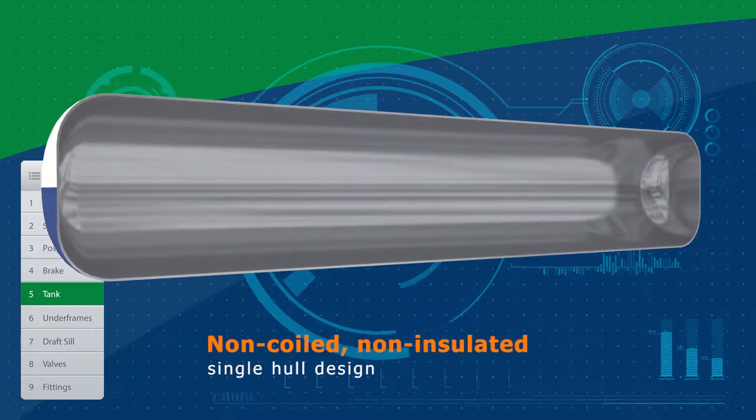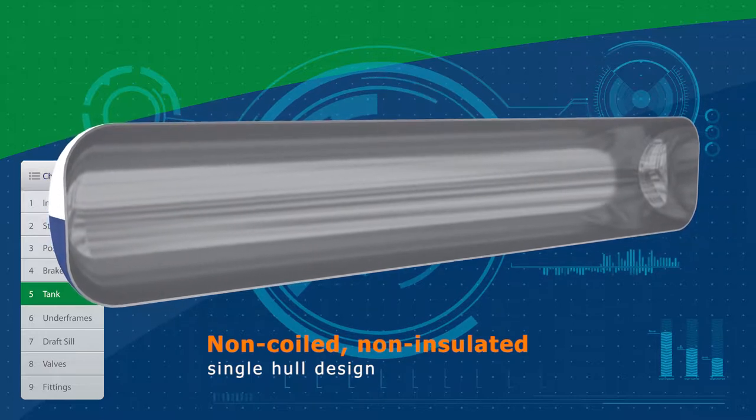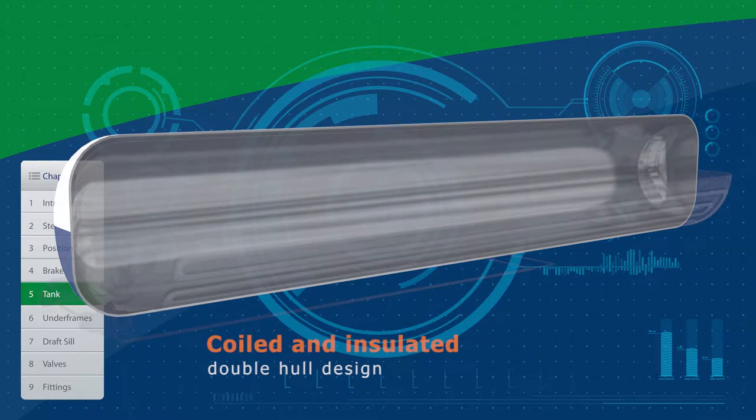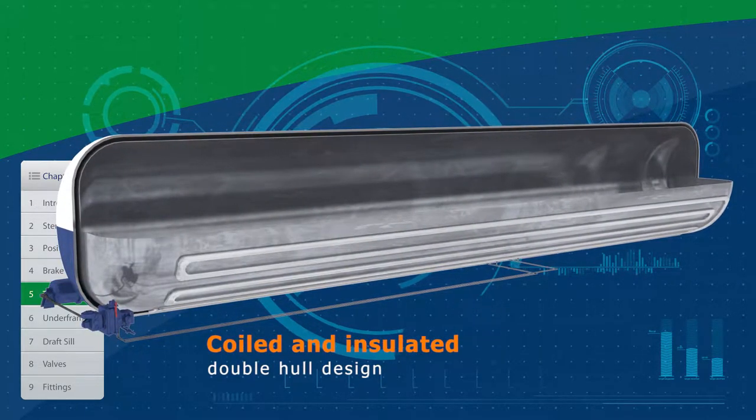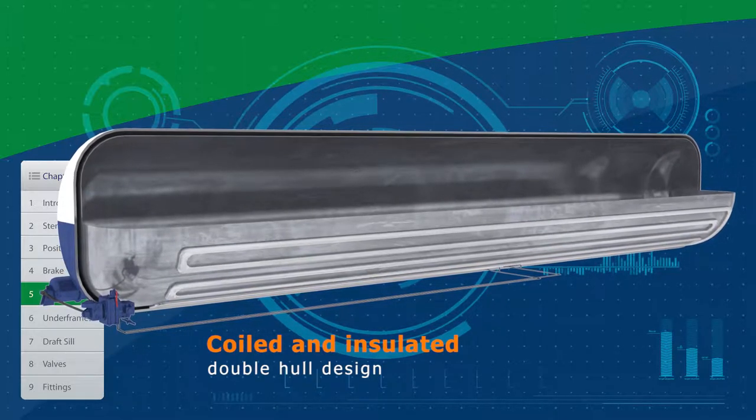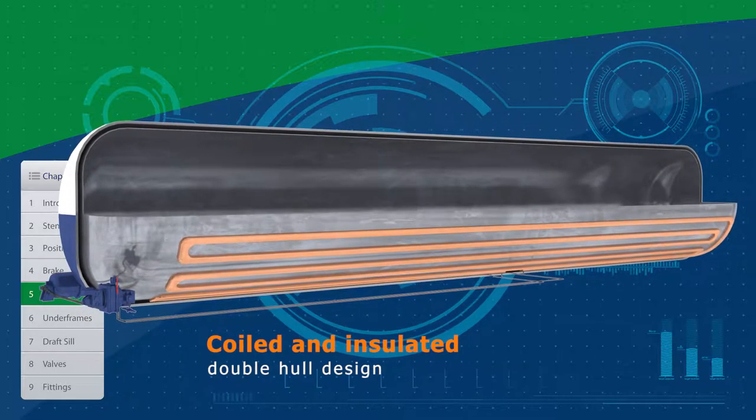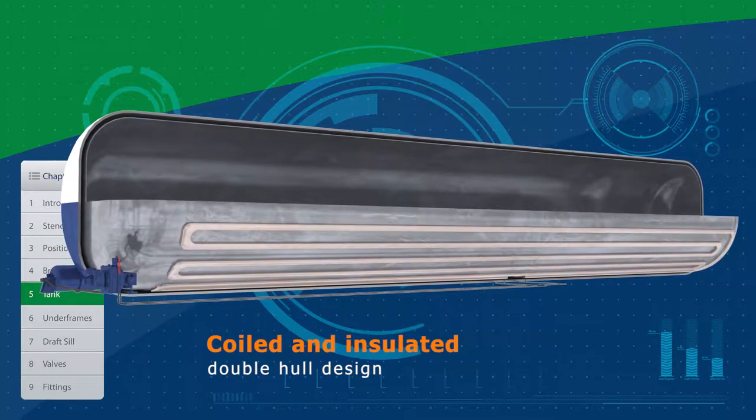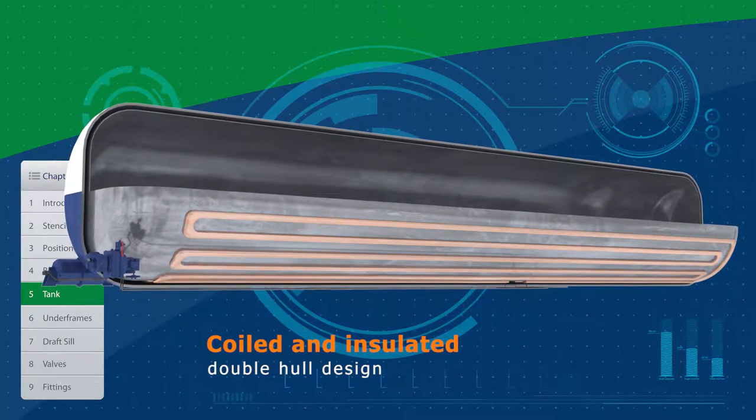The shell is normally 7/16th inch thick for older cars and 11/2 inch thick for newer cars built to the CPC 1232 specification. A coiled and insulated tank car utilizes a double-hole construction commonly referred to as a tank within a tank. The inner tank is normally 7/16th inch thick. Welded to it are 12 runs of 8 inch diameter half-oval heater coils. Steam or heated oil pumped into the coils conducts heat directly to the tank shell, which in turn heats up the commodity inside for unloading.